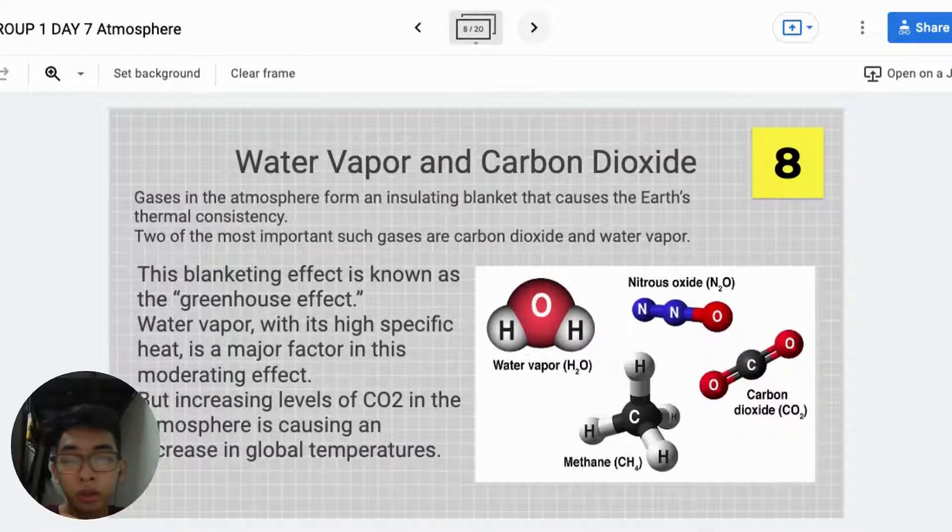This blanketing effect is known as the Greenhouse Effect. Water vapor, with its high specific heat, is a major factor in this moderating effect. But increasing levels of CO2 in the atmosphere is causing an increase in global temperatures.